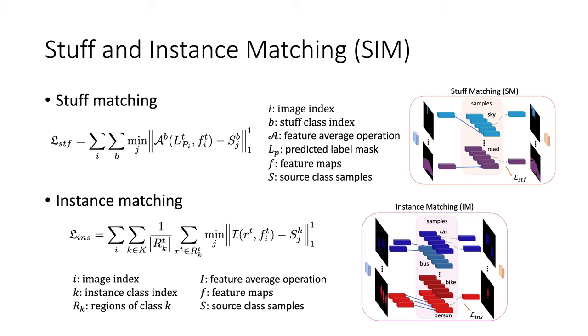For stuff matching, we average the stuff class features from a target image and minimize the L1 distance with the most similar source feature samples.